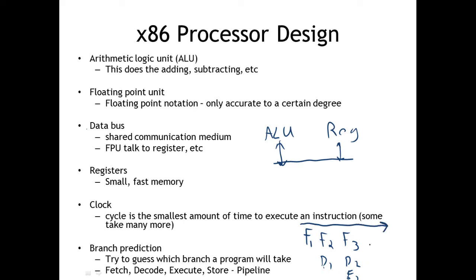As the CPU goes through fetching, decoding, executing, and storing, it tries to predict which branches the program will take — this is branch prediction. Because it's executing instructions ahead of time and anticipating results, it's often very good at this and improves performance. Sometimes it goes down the wrong branch, has to flush the pipeline and start over, resulting in a performance penalty.